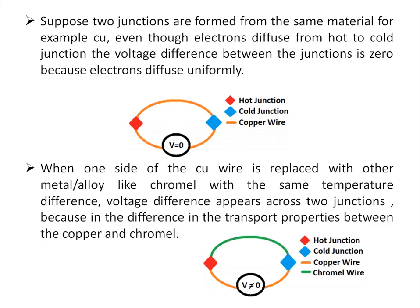If the two materials forming the two junctions are the same, no EMF will be produced because the Seebeck coefficient for both materials is equal and the net EMF difference is zero. When one copper wire is replaced with a metal alloy like chromel, which has a different Seebeck coefficient, the two junctions will have different EMFs. This creates a net EMF that is proportional to the temperature difference between the two junctions, and the voltage across each metal element depends upon its Seebeck coefficient.